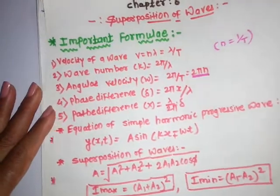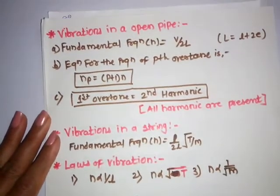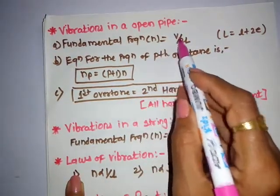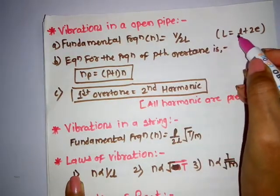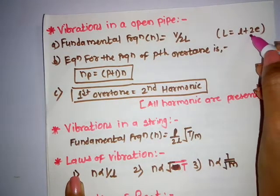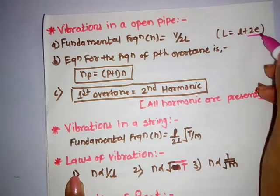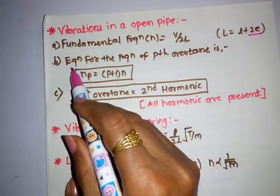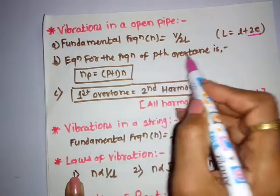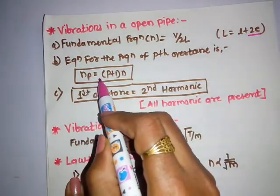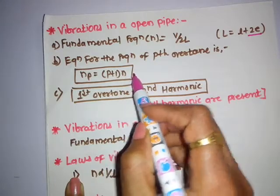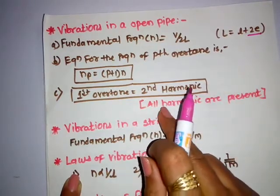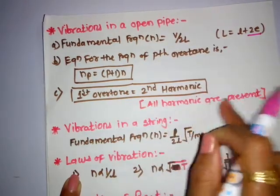For vibrations in an open pipe, the fundamental frequency is n = v/2L, where capital L = small l + 2e. When a pipe is open at both ends, the end correction is twice e. The frequency of the pth overtone is given by n_p = (p+1)n. In this case, first overtone equals the second harmonic, and all harmonics are present.